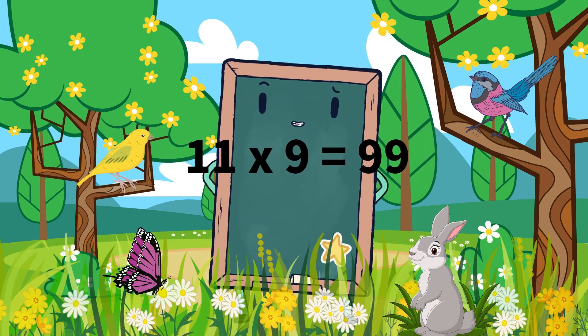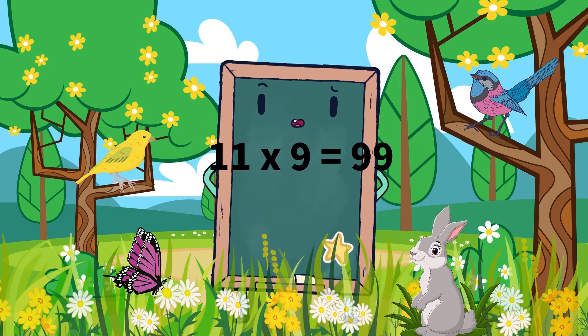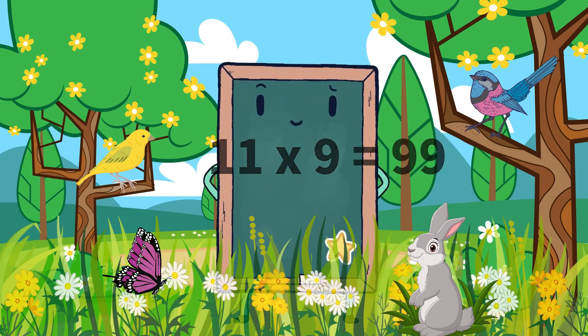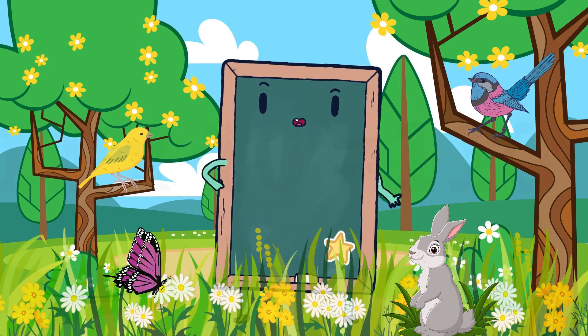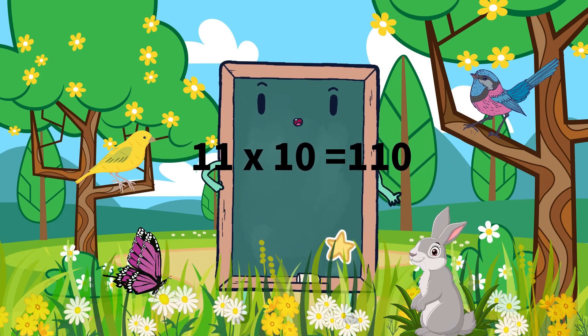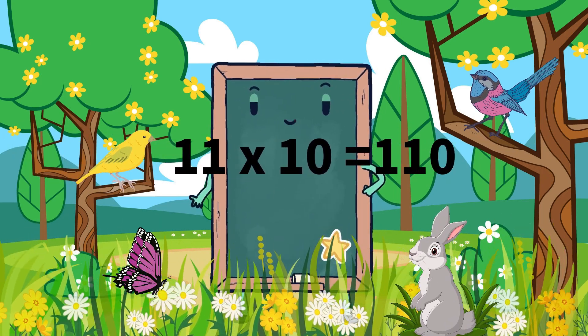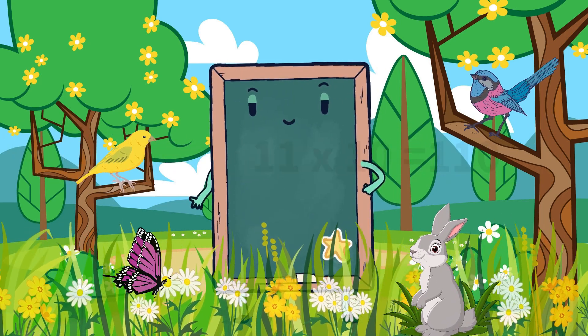11 times 9 is 99, 11 times 9 is 99. 11 times 10 is 110, 11 times 10 is 110.